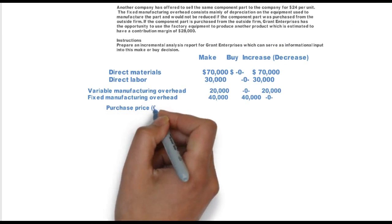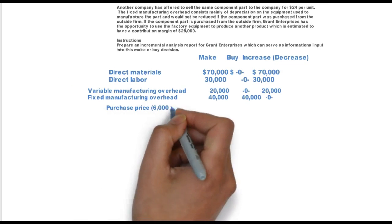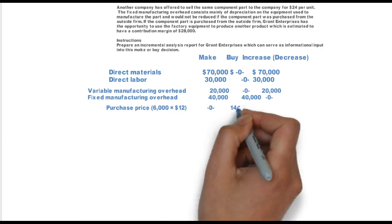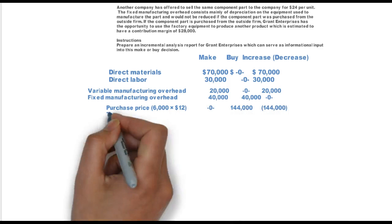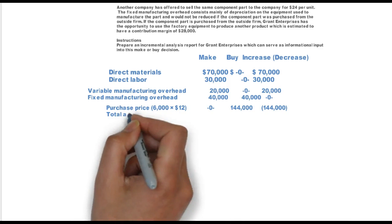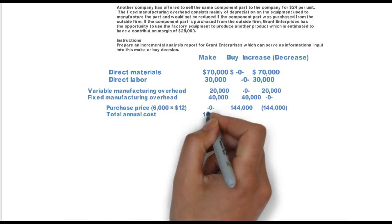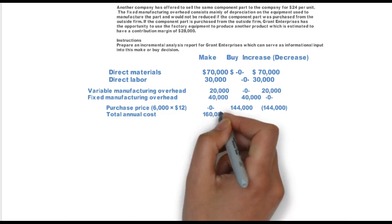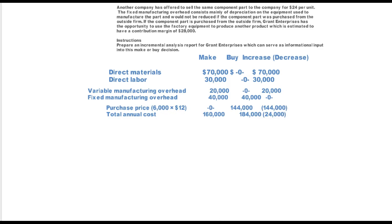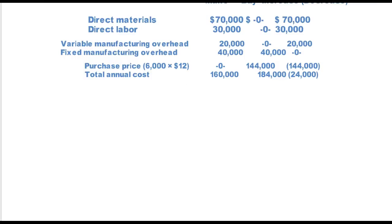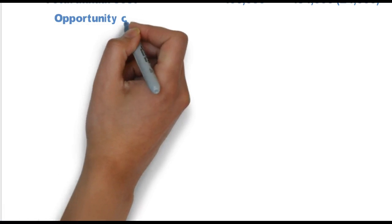Fixed manufacturing overhead is irrelevant because it's $40,000 whether I make or buy, so there is no difference. The purchase price on the 6,000 units is $144,000. Total annual cost would be $160,000 to make versus $184,000 to buy — a difference of $24,000 — and therefore based on that alone, I would continue to manufacture.